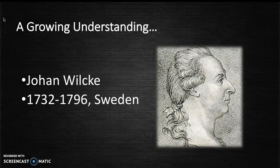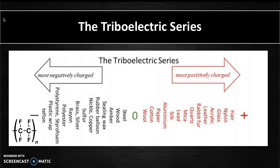And later, John Wilka came along and is credited with putting together the first triboelectric series. Wilka determined that positively charged objects and negatively charged objects could be placed on a spectrum. Materials on the positive side tend to have a greater tendency to donate electrons than those on the negative side, which tend to accept electrons, thus becoming more negatively charged.